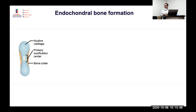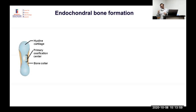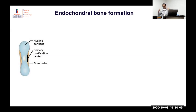In membranous ossification, osteoblasts directly form the bone and it has appositional growth. An area of bone is formed which keeps growing. The flat bones — skull bones, scapula, and some parts of long bones — have membranous growth.